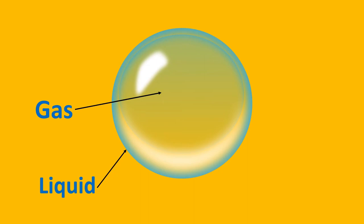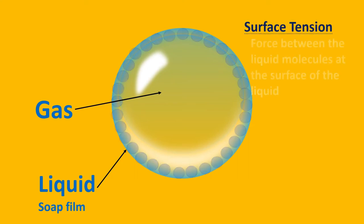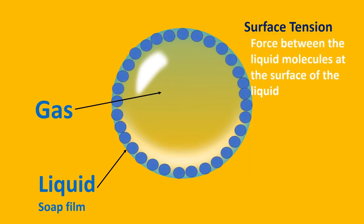In the case of a soap bubble, the outside liquid layer is a soap film made from soap and water. Now, why are the bubbles in a spherical shape? Here we should know about surface tension — it is the force between liquid molecules at the surface of the liquid.